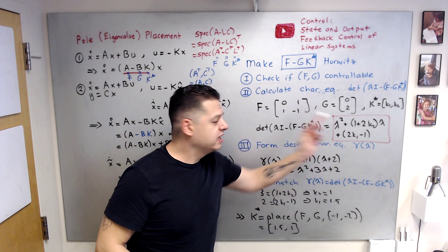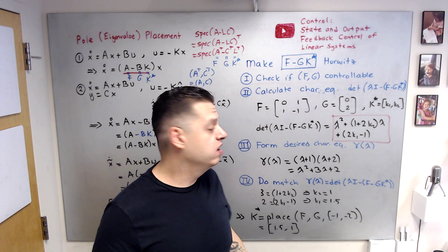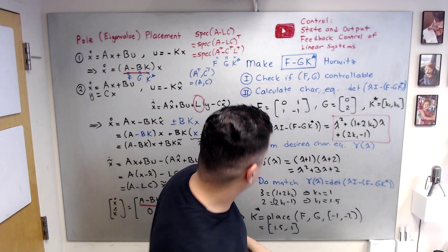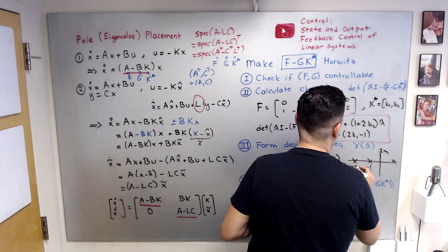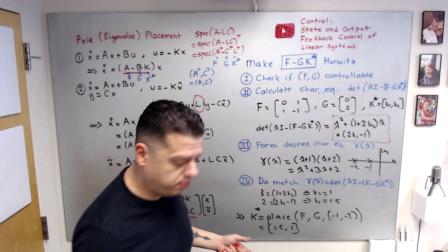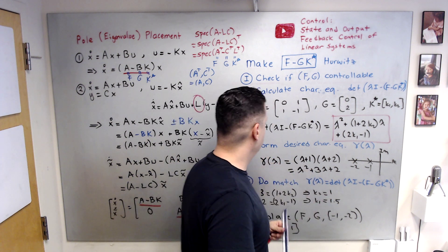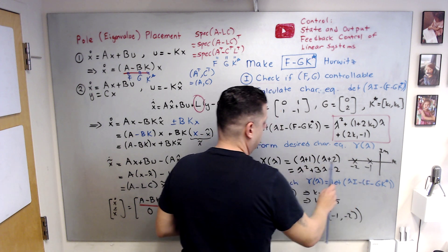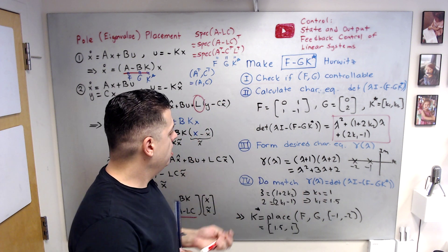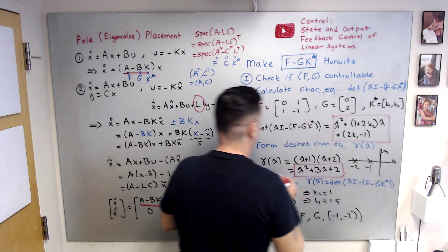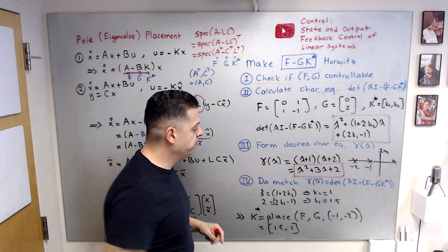Step three: form the desired characteristic equation γ(λ), a polynomial that captures where you want your eigenvalues. For example, suppose I want closed-loop eigenvalues at −1 and −2 on the real axis. Then the desired polynomial is (λ + 1)(λ + 2), and expanding gives λ² + 3λ + 2. For Hurwitz stability, all desired eigenvalues must lie in the left half plane. Mark this as the desired polynomial.